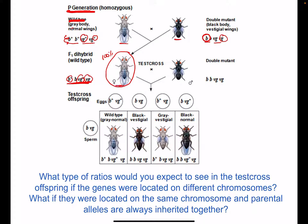They then took those F1 females and did a test cross with double mutant males. If we did the Punnett square, we would expect a 25/25/25/25 ratio. But that's not what Thomas Hunt Morgan got. Instead he got 965 of one type, 944 of another, 206 of a third, and 185 of the fourth — definitely not what we expected. That's more like a 75/25 ratio instead of a 1:1:1:1 ratio.